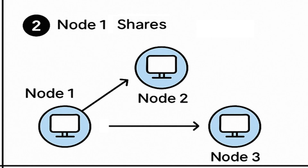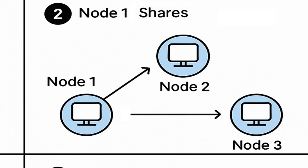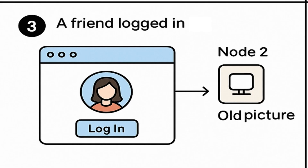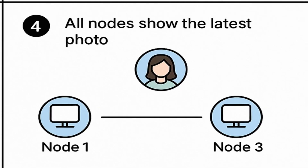Because you are very excited to share your new profile picture with your friend, you tell a friend across the country to check out your profile. Your friend logs in to the social media platform and their request goes to node 2, which has not received your updated profile picture yet. So they will see your old photo. But a few seconds later, node 2 and node 3 will catch up, and all the nodes will show the latest photo. This is eventual consistency in action.